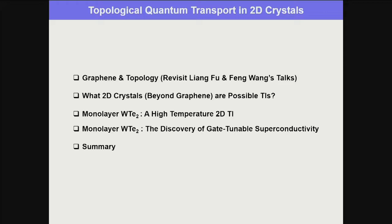Then I'll come back to the question I asked about what kind of 2D crystals are possible topological insulators. I'll give you an example — an experimental study of monolayer tungsten ditelluride, which we studied a few years ago. We find it's a 2D topological insulator even at high temperature, and we also made a discovery of superconductivity in this same material.